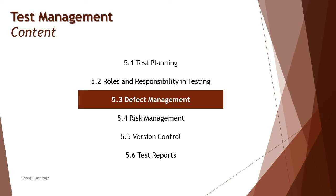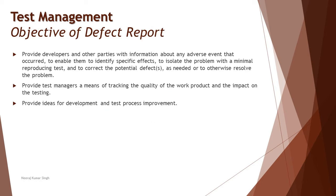We'll be trying to understand what exactly a defect report is about and what we should include in it. To get started, the very first thing we're talking about is the objective of writing a defect report. A lot of people may think that when a tester is aware of an issue, they can just explain it verbally to the developer. But the need is that not everything can be virtually explained — documentation cannot be replaced.